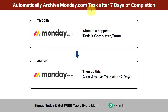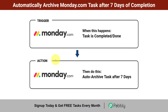Automatically archive monday.com tasks after 7 days of completion. If you are using monday.com for managing all your projects and whenever a task is completed you want to automatically archive all completed tasks after 7 days, so you do not have to manually archive each task one by one. For that we are going to set up an automation, and this is just a one-time process.